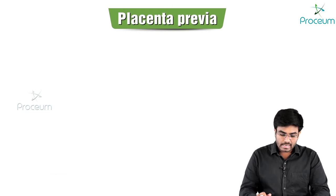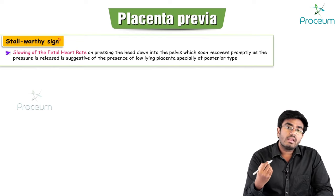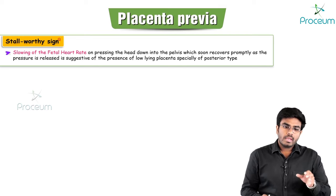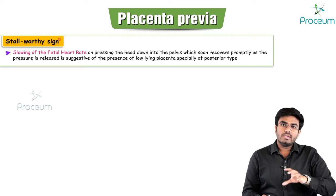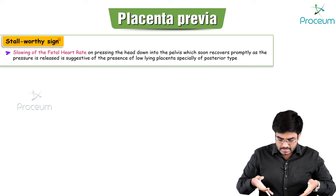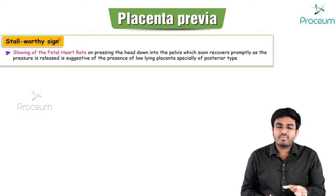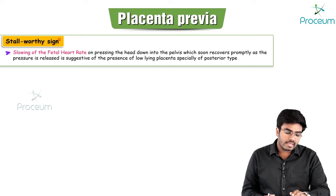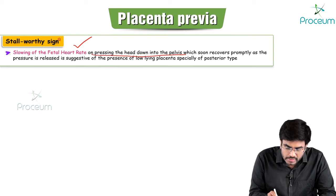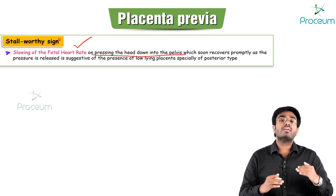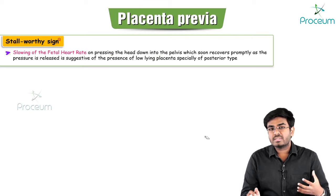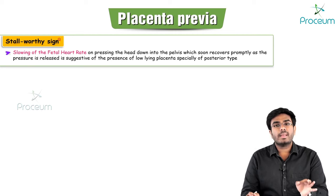The Stalwart sign is associated with placenta previa. If you push the fetal head downward toward the cervix — where the placenta is in the lower uterine segment — the fetal heart rate decreases due to placental compression. This slowing of fetal heart rate on pressing the head down into the pelvis is known as the Stalwart sign.